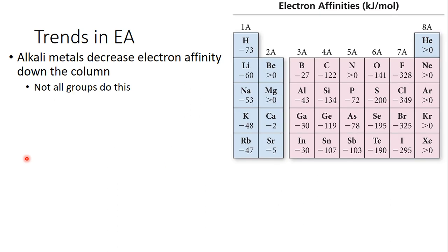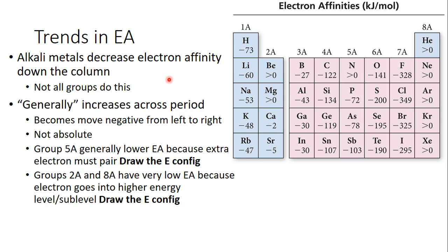And the trends for electron affinity aren't as nice as ionization energy, but we'll look at some of them. First, for alkali metals, as we go down the group, electron affinity decreases. So hydrogen really wants an electron, rubidium not as much.